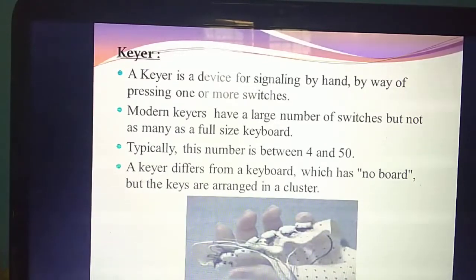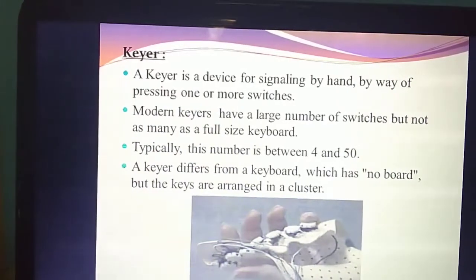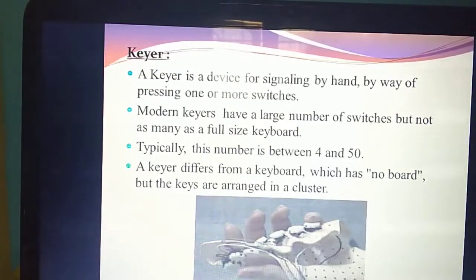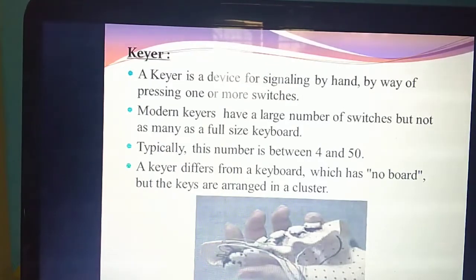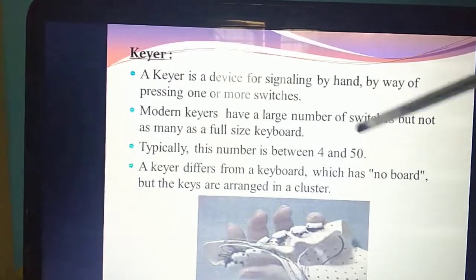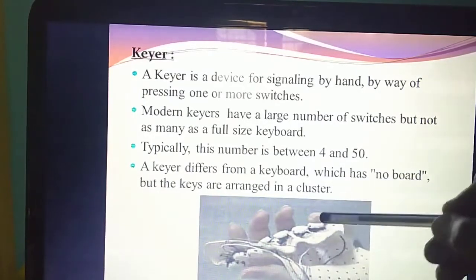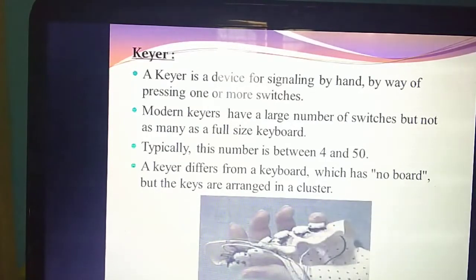Next input device is a keyer. Have you seen this device? See this diagram — this is the diagram for keyer. Keyer is similar to the keyboard. You give inputs by typing characters or numbers using a keyboard. Likewise, the same purpose — instead of using keyboard, they use keyer. You give input by signaling by hand, pressing particular switches present on it. This keyer is kept inside the hand. You can see some white color buttons — that is the keyer. If you need to communicate or give input, you need to press these keys present inside it.